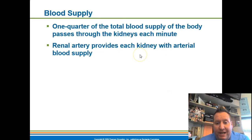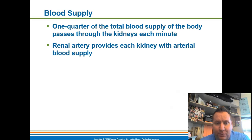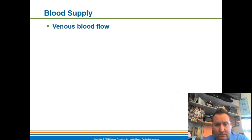A quarter of your body's blood supply goes through the kidneys every single minute — that's remarkable. The renal artery supplies the kidney with blood through the renal hilum, and blood flows out of the kidney through the renal vein.